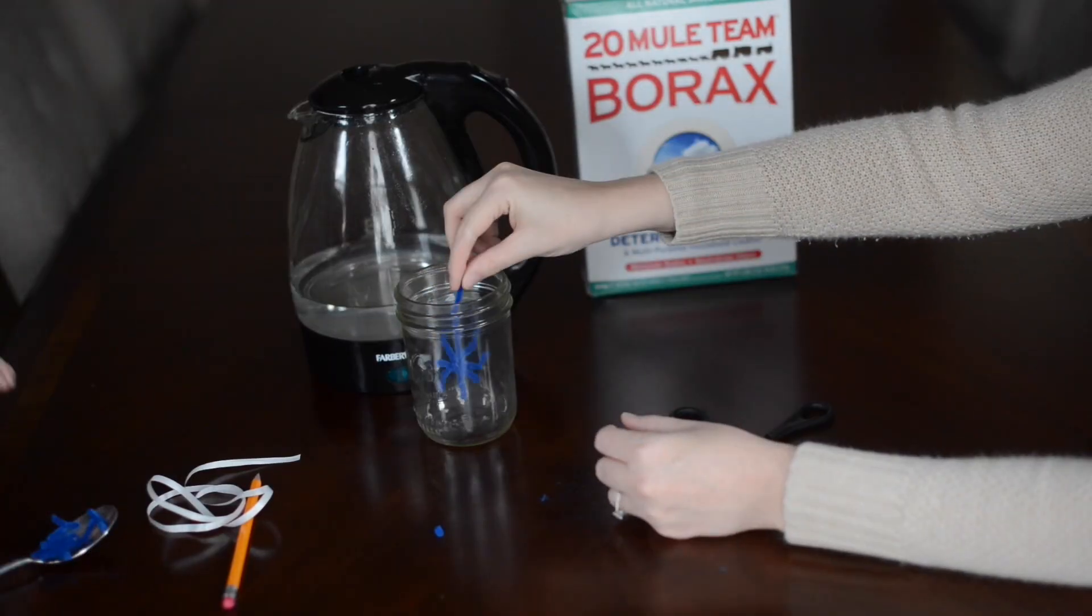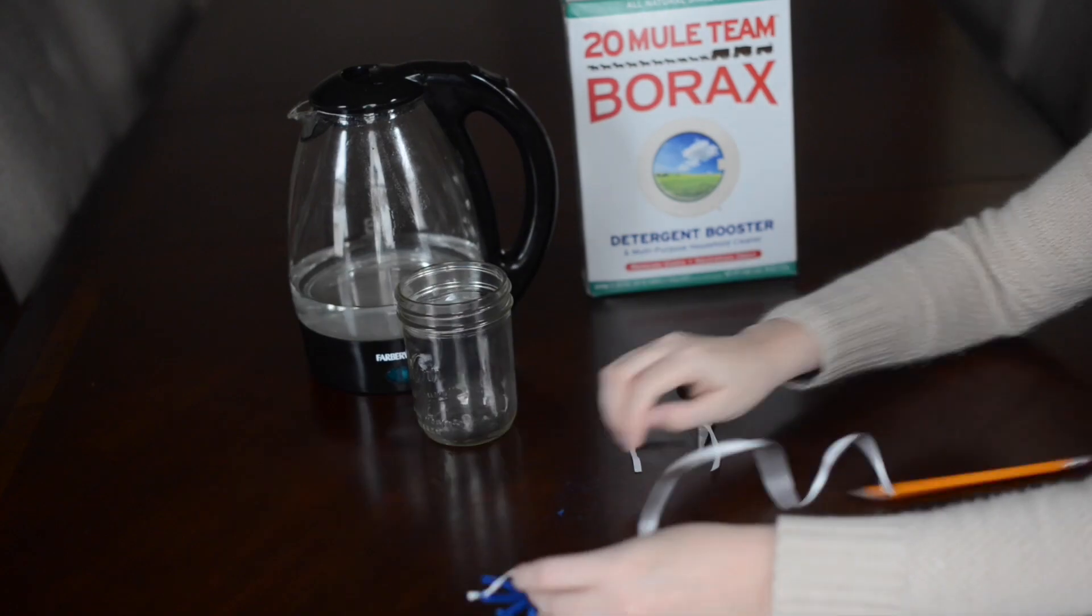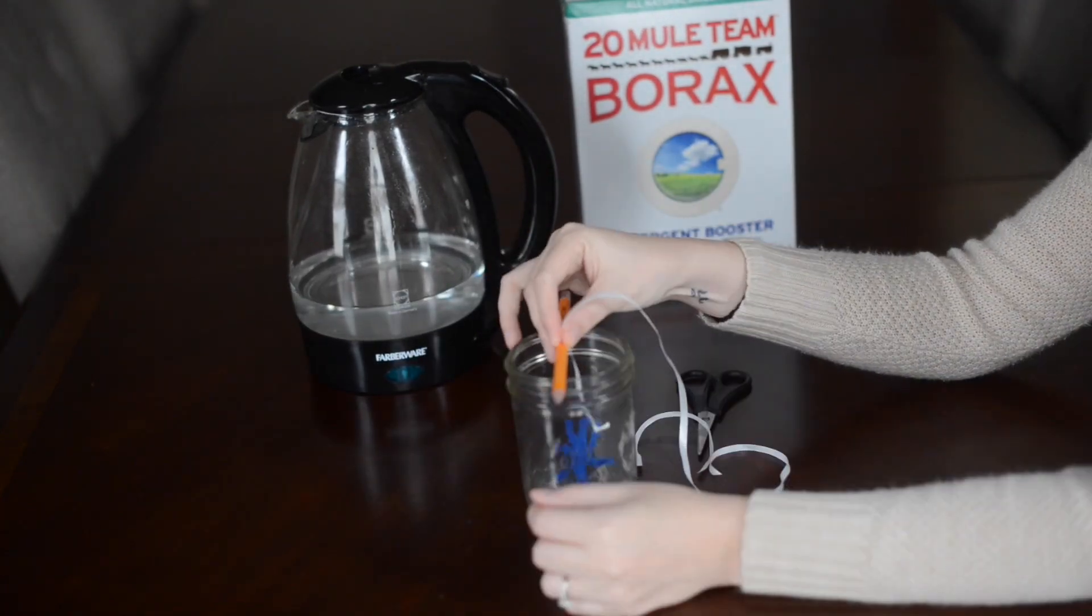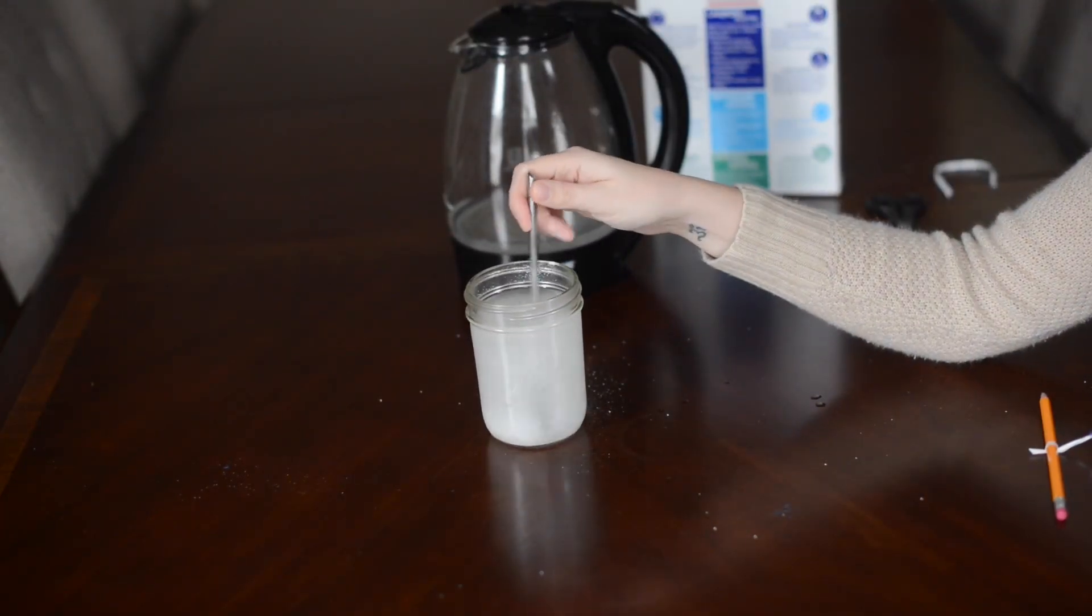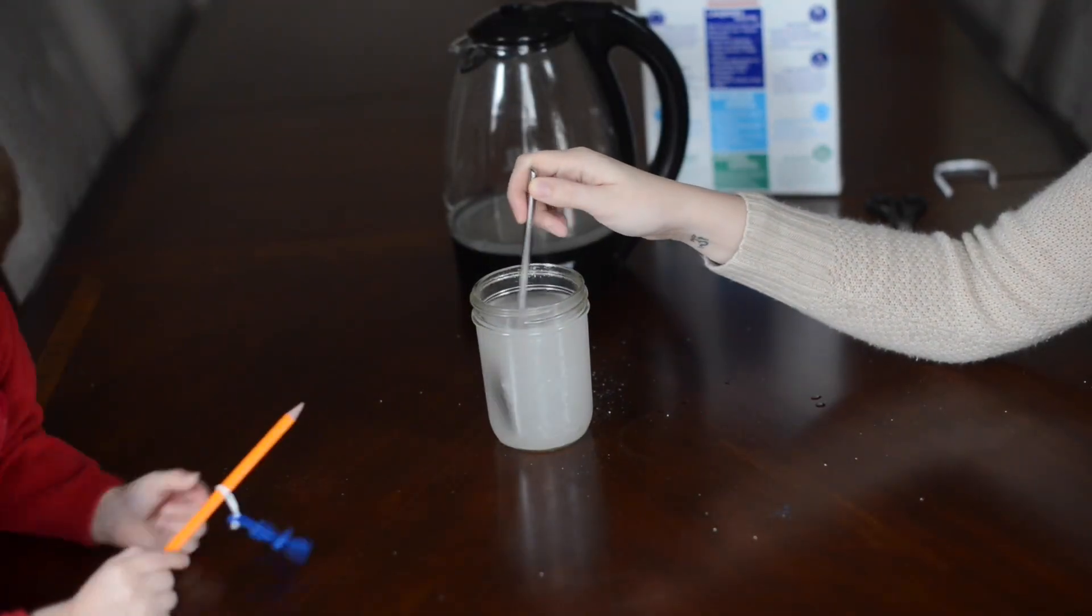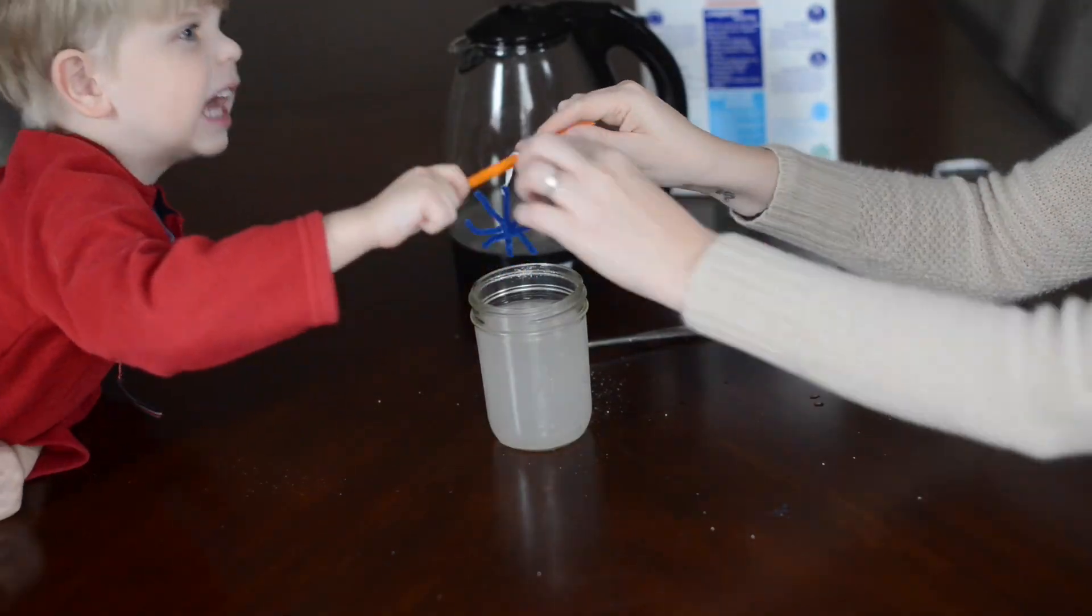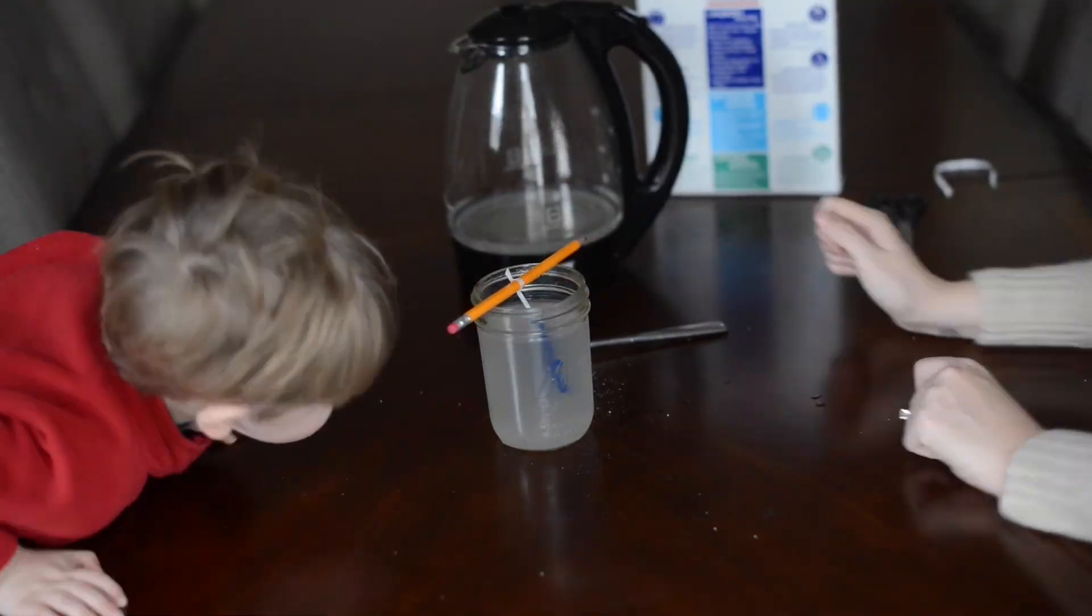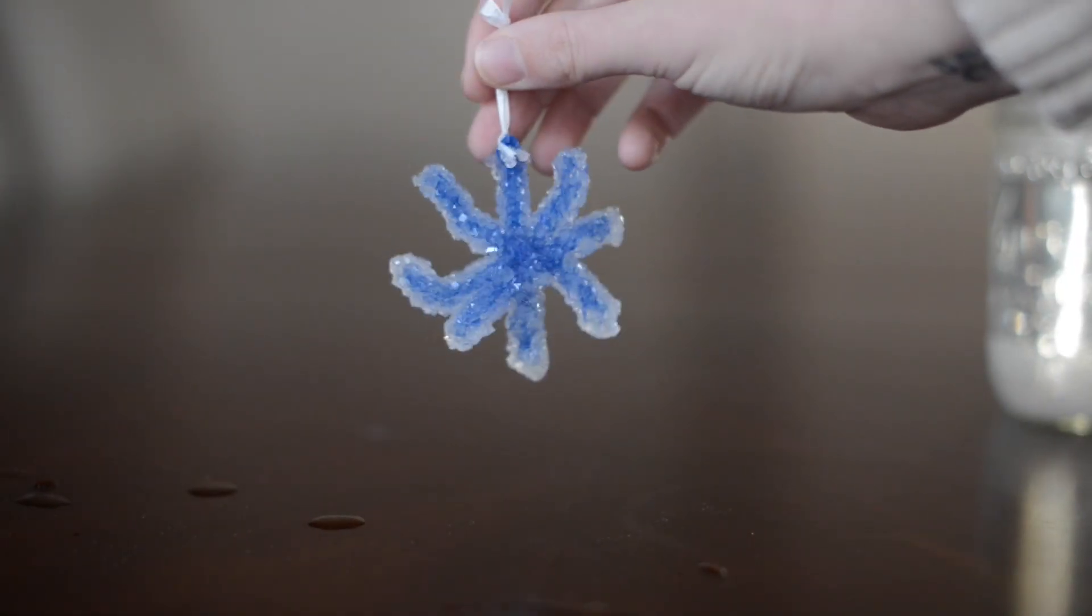And then you just make your snowflake or whatever shape you like. Add the string, tie the string to the pencil and make sure that the string isn't long enough so that it doesn't touch the sides or the bottom of the cup. And then you want to add three tablespoons of borax to one cup of water. And then put it in there and wait overnight. And the next day you'll have a crystal ornament.